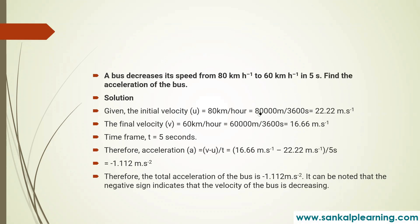80 into 1000 divided by 3600 gives 22.2 meter per second. And 60 into 5 divided by 18 gives 16.6 meter per second. The time is given as 5 seconds. Therefore acceleration is nothing but change in velocity divided by time.